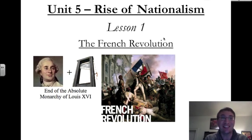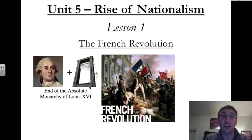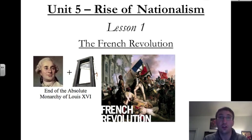In this lesson, we're going to be talking about the end of the absolute monarchy in the country of France, and that means the end of Louis and the separation of his head from the rest of his body with this device called the guillotine. Why did this happen? Because the people of France rose against the absolute monarchy. Let us venture on with our study.